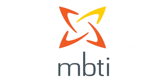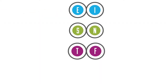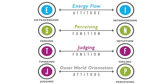Personality type, as defined by the MBTI, is made up of four scales or elements. Each scale is made up of two psychologically opposite words that identify ways of being, and you'll have a natural preference for one of the two opposite ways on each scale.